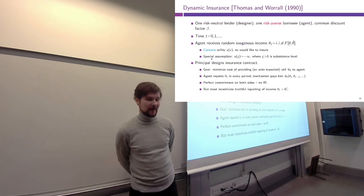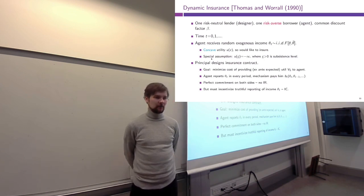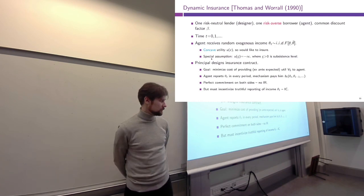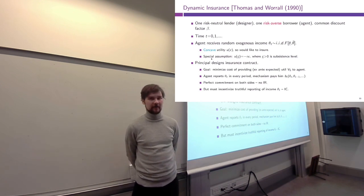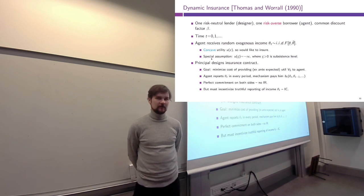If agents had perfect access to capital markets — deposits and loans — they would insure themselves up to their average lifetime income, depositing excess income and taking loans in times of hardship. However, capital markets are not perfect. So what if agents do not have access to those capital markets? The answer is there is scope for government intervention, and this is the main idea behind social security systems.